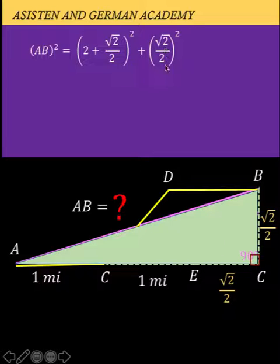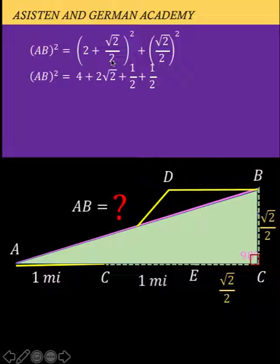Simplifying this, it's the square of a binomial. The square of 2 is 4 plus twice the product of the first and second term, so you have 2 times 2 times square root of 2 over 2, which equals 2 square root of 2, plus the square of square root of 2 over 2, which is one half, plus the square of square root of 2 over 2 again, which is also one half. So 4 plus one half plus one half is 5.